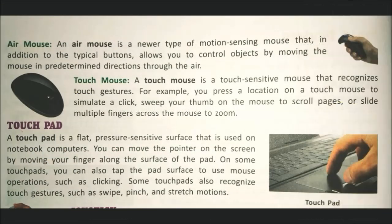Air mouse (ear mouse): this is a mobile type of motion-sensing mouse that, in addition to the typical buttons, allows you to control objects by moving the mouse in determined directions through the air. This is a new type of motion-sensing technology.